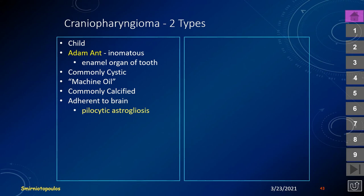Another common sellar and suprasellar lesion is the craniopharyngioma. About 75% present in the suprasellar cistern and secondarily extend into the pituitary fossa. Craniopharyngiomas consist of two histologic types. Children commonly have the adamantinomatous type, whose histology resembles the enamel organ of a tooth bud. These are heterogeneous with fluid-filled areas containing machine oil, which may cause T1 shortening and be bright on non-contrast T1. The solid portions enhance and are commonly calcified. A problem is that they tend to be sticky to the overlying hypothalamus, inducing a pilocytic astrogliosis that may be mistaken for hypothalamic glioma on biopsy.